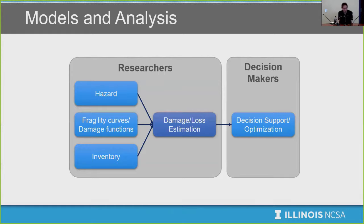Researchers define the hazard and intensity measure. The second important component is fragility curves and damage functions, which describe how fragile built-in infrastructure structures are depending on the intensity measure. The third important component is inventory — the location of buildings, their structural characteristics, and their economic value. If you have these three components, you can perform risk assessment analysis that gives you damage or loss estimation of the system. Based on that, decision makers can do decision support or optimization.